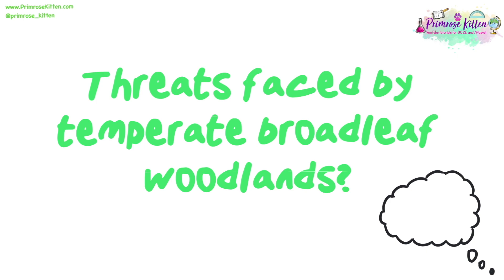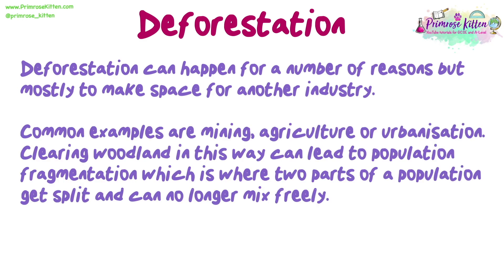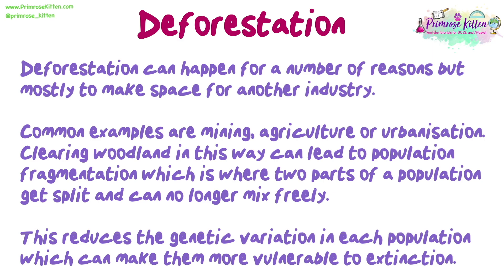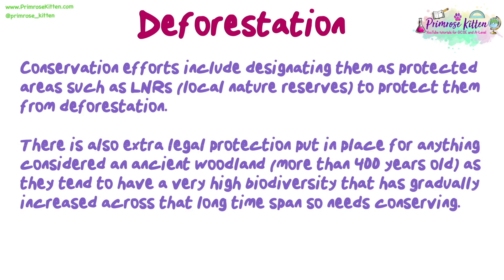Threats faced by temperate broadleaf woodlands. Deforestation can happen for a number of reasons, mostly to make space for another industry — common examples are mining, agriculture or urbanization. Clearing woodland can lead to population fragmentation, where two parts of a population get split and can no longer mix freely, reducing genetic variation and making them more vulnerable to extinction. Conservation efforts include designating them as protected areas such as LNRs (local nature reserves). There is also extra legal protection for ancient woodland — more than 400 years old — as they tend to have very high biodiversity that has gradually increased over that long time span.